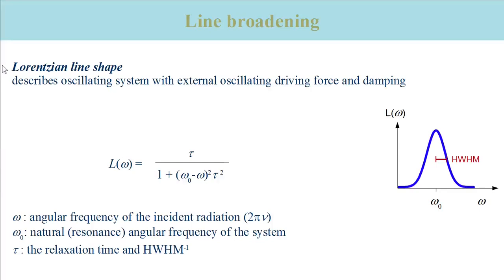A Lorentzian line shape describes the behavior of an oscillating system that is subjected to an external oscillating driving force and some form of damping.